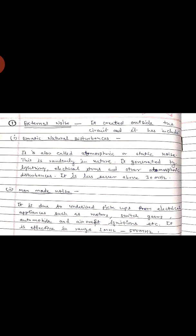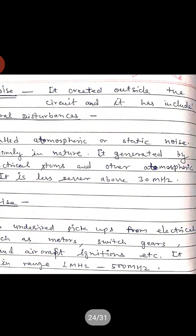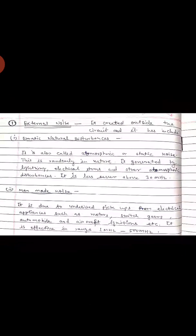Atmospheric noise is generated through atmospheric effects and disturbances. Examples include lightning, electric storms, and other atmospheric disturbances. It is less severe above 30 MHz. Man-made noise is due to undesired pickups from electrical appliances such as motors, switchgears, and automobile and aircraft ignitions. It has a frequency range from 1 MHz to 500 MHz.